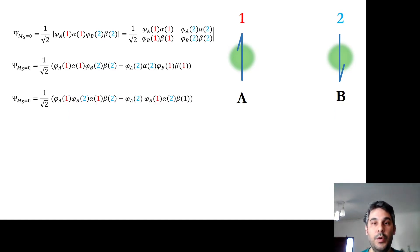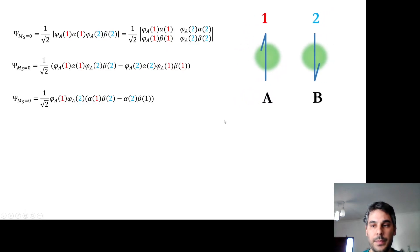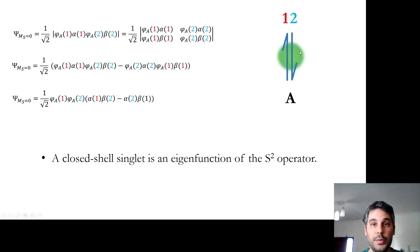What happens when both electrons are in the same orbital? Writing a Slater determinant with both electrons in orbital phi_a, we carry out the determinant and find that we can again separate the wave function into a spatial part and a spin part. In this case, the spatial part is symmetric and the spin part is anti-symmetric, but the total wave function is anti-symmetric. This describes a closed-shell singlet, where paired electrons occupy the same orbital. A closed-shell singlet is an eigenfunction of the S² operator, as we will prove in the next video.